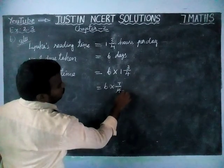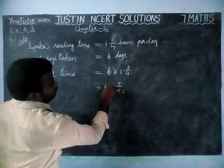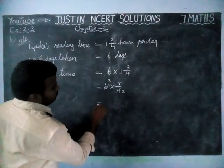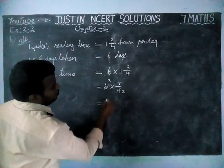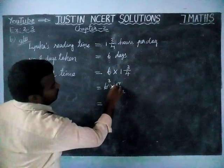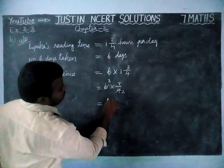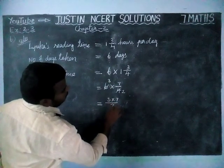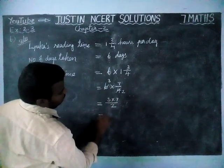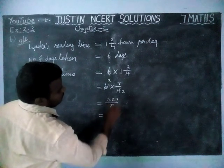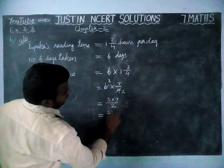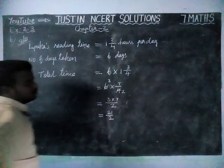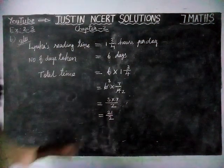2 twos are 4, 3 twos are 6. Now, 3 into 7 divided by 2. 3 sevens are 21, divided by 2. This is an improper fraction.